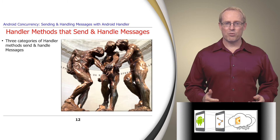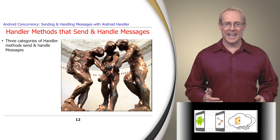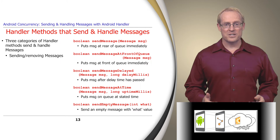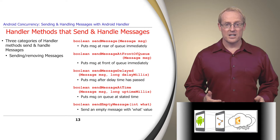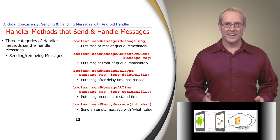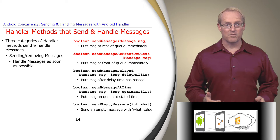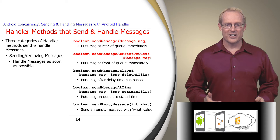There are three main categories of handler methods relating to sending and handling messages. For example, there are several variants of the sendMessage method itself, some of which are highlighted on this slide. As with POST, some sendMessage methods add a message to the front or rear of the message queue, where they're processed as soon as the queue is ready to do so.